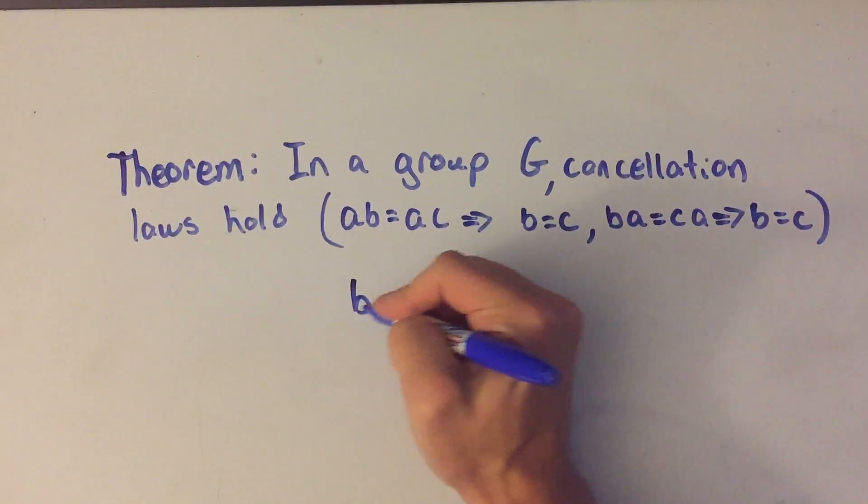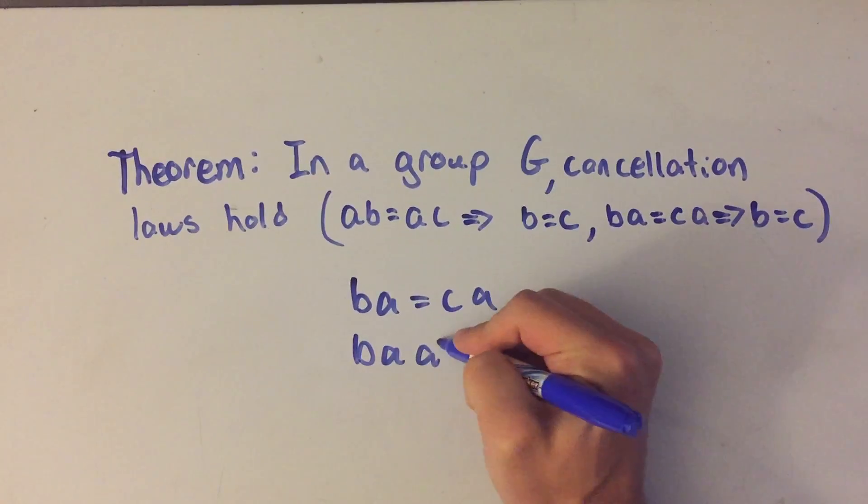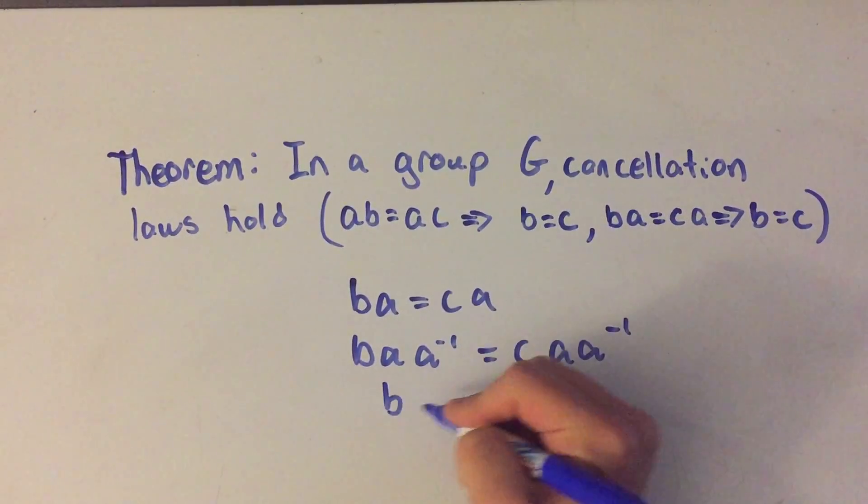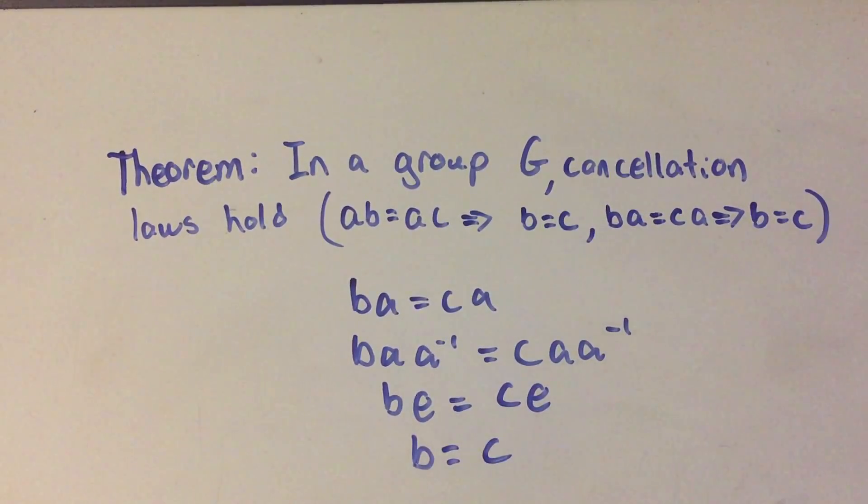If I had that ba is equal to ca, I'll just take a inverse on the right this time. And we'll just get the identity on the right side, but you get the exact same result.